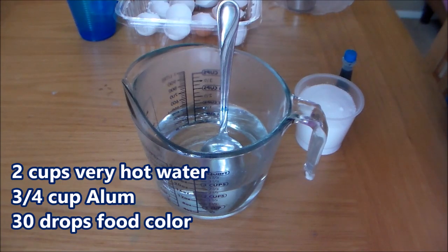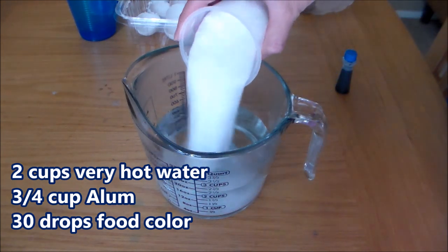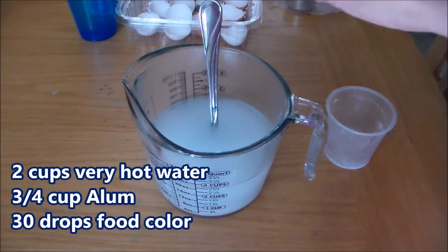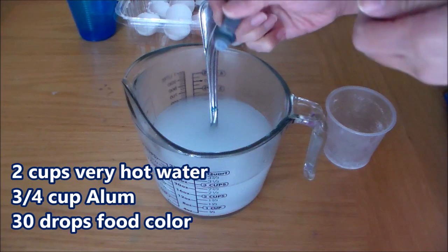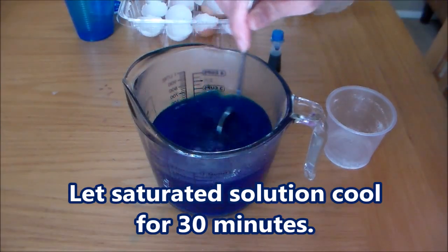For the solution, you will need two cups of very hot water. You're going to combine that with three fourth cup of aluminum sulfate. We're going to stir this to dissolve it. You're also going to add about 30 drops of food color. Stir your solution until the alum dissolves.